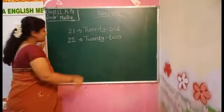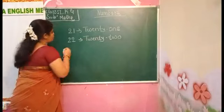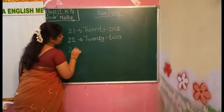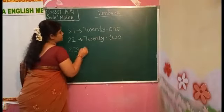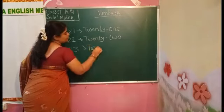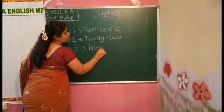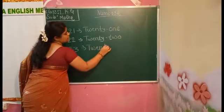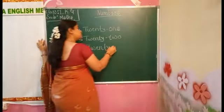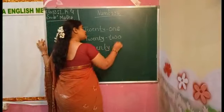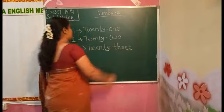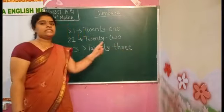After 22 comes 23. The number name of 23 is spelled T-W-E-N-T-Y T-H-R-E-E. 23.